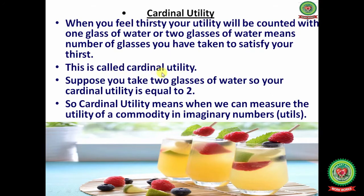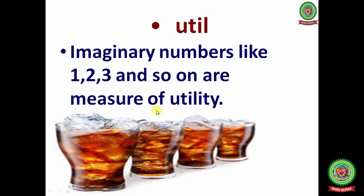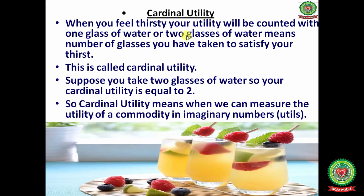Utils are imaginary numbers like 1, 2, 3 and so on that are used as measures of utility. For example, if there are 4 glasses, we number them 1, 2, 3, 4 — these imaginary numbers are called utils.